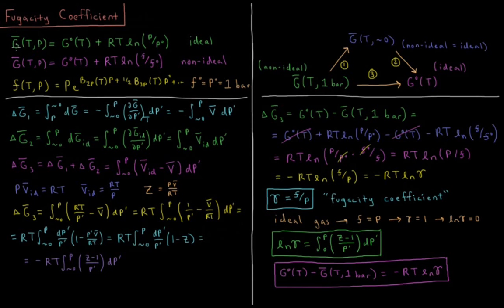We'll start off with our expression for the molar Gibbs energy of an ideal gas. For an ideal gas the molar Gibbs energy — the Gibbs energy divided by the number of moles — is a function of temperature and pressure. It's equal to the standard Gibbs energy at that temperature, which is at a pressure of the standard pressure of one bar, plus RT ln(P/P°).